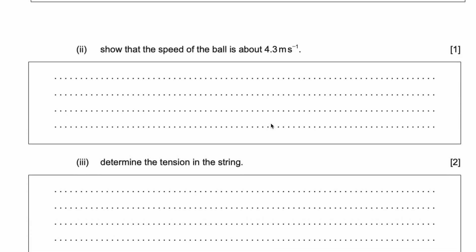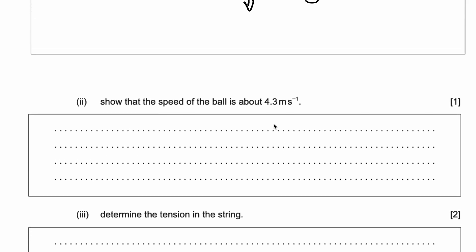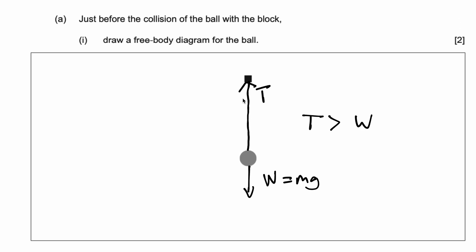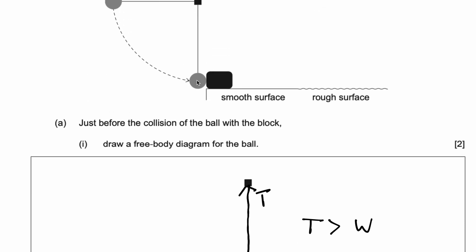That's two marks right there. Part 2: show that the speed of the ball is about 4.3 meters per second — right as the ball is hitting this block, what is the speed?